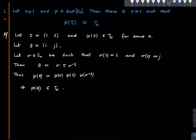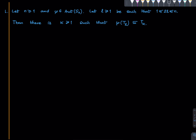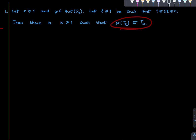By the same reasoning one can show a more general result: if n is a positive integer, φ is an automorphism of Sₙ, and l is a positive integer in the valid range, then there exists k such that the image of Tₗ under φ is contained in Tₖ. The range restriction is natural — if l exceeded n/2 you could not have l disjoint transpositions on n symbols. In the previous lemma we had l = 1; here l is general but the argument is exactly the same.